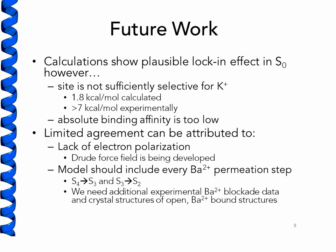Although we're able to rule out some scenarios and have developed a framework for describing barium blockades in terms of PMFs, we're still well short of quantitative agreement. Site S0 is not sufficiently selective for potassium — our calculated selectivity is only about 2 kcal per mole, but experimentally it's at least 7 kcal per mole. Beyond that, the absolute binding free energy is too low for potassium to block barium permeation at micromolar concentrations. We can attribute part of this to our use of non-polarizable force fields, and we're in the process of developing a polarizable force field to correct this. We also need to seriously consider the possibility that the lock-in effect is actually occurring at an earlier translocation step, rather than during the S2 to S1 transition.